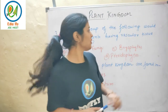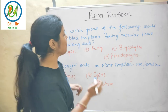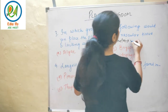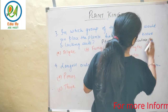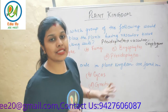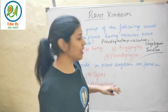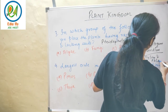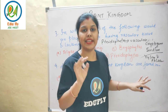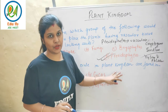The next question: in which group would you place plants having vascular tissue but lacking seeds? The answer is pterophytes. Pterophytes are cryptogams — they are seedless and have vascular tissue, that is xylem and phloem. So the option will be option D, that is pterophytes.